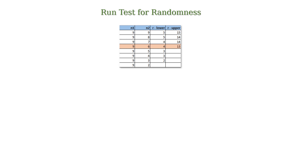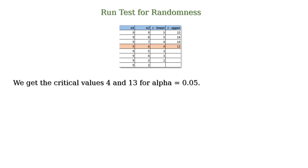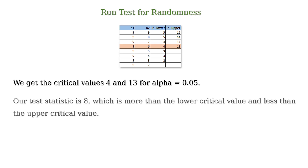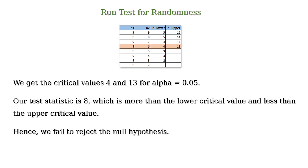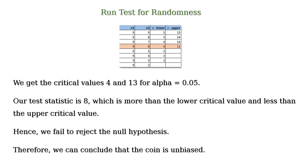We get the critical values 4 and 13 for alpha equal to 0.05. Our test statistic is 8, which is more than the lower critical value and less than the upper critical value. Hence, we fail to reject the null hypothesis. Therefore, we can conclude that the coin is unbiased.